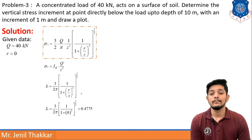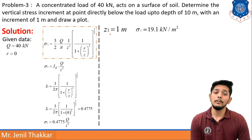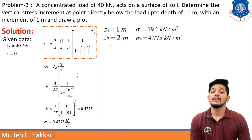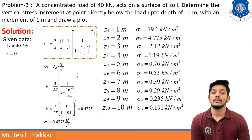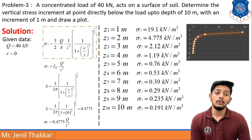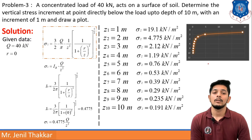I have got Ib = 0.475, and Q = 40 is constant. Putting z₁ = 1 meter, I am getting σz equal to 19.1 kN/m². Then z₂ is put as 2 meters and σz is calculated similarly. I will put z₁ through z₁₀ and get all these values.